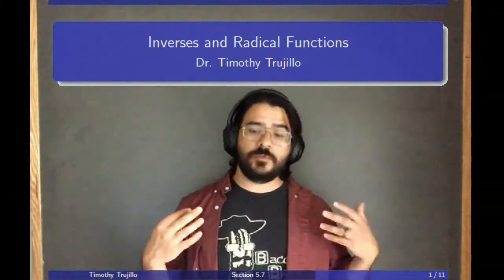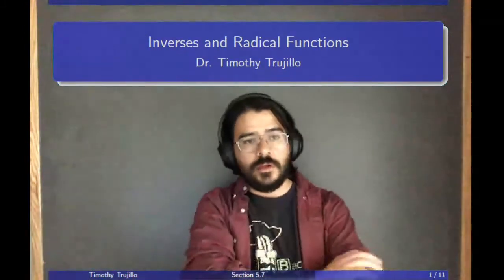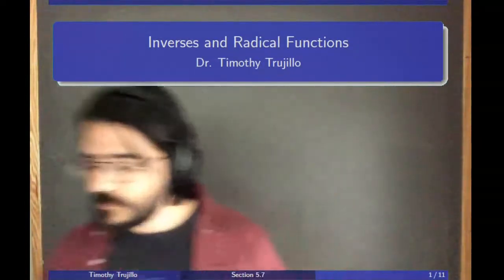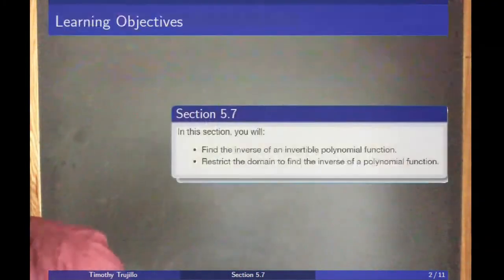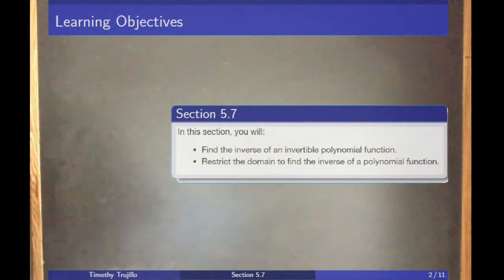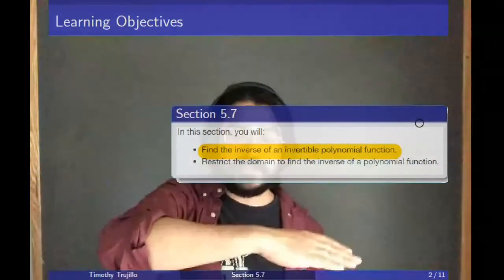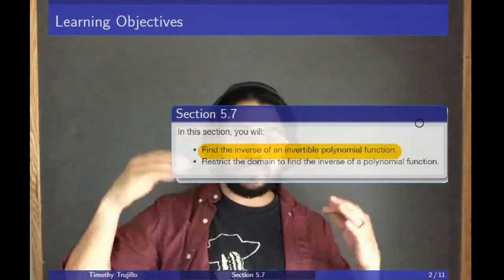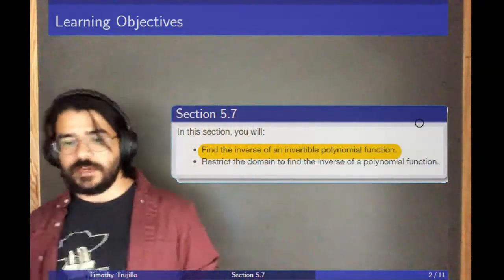We must be really careful because we have to guarantee that our functions pass the horizontal line test and indeed are one-to-one before we start trying to find an equation for the inverse. Our first objective is to find the inverse of an invertible polynomial. The term invertible polynomial here just means that it passes the horizontal line test, so that when you flip it across y=x and replace y with x, you get something that passes the vertical line test and is actually a function.